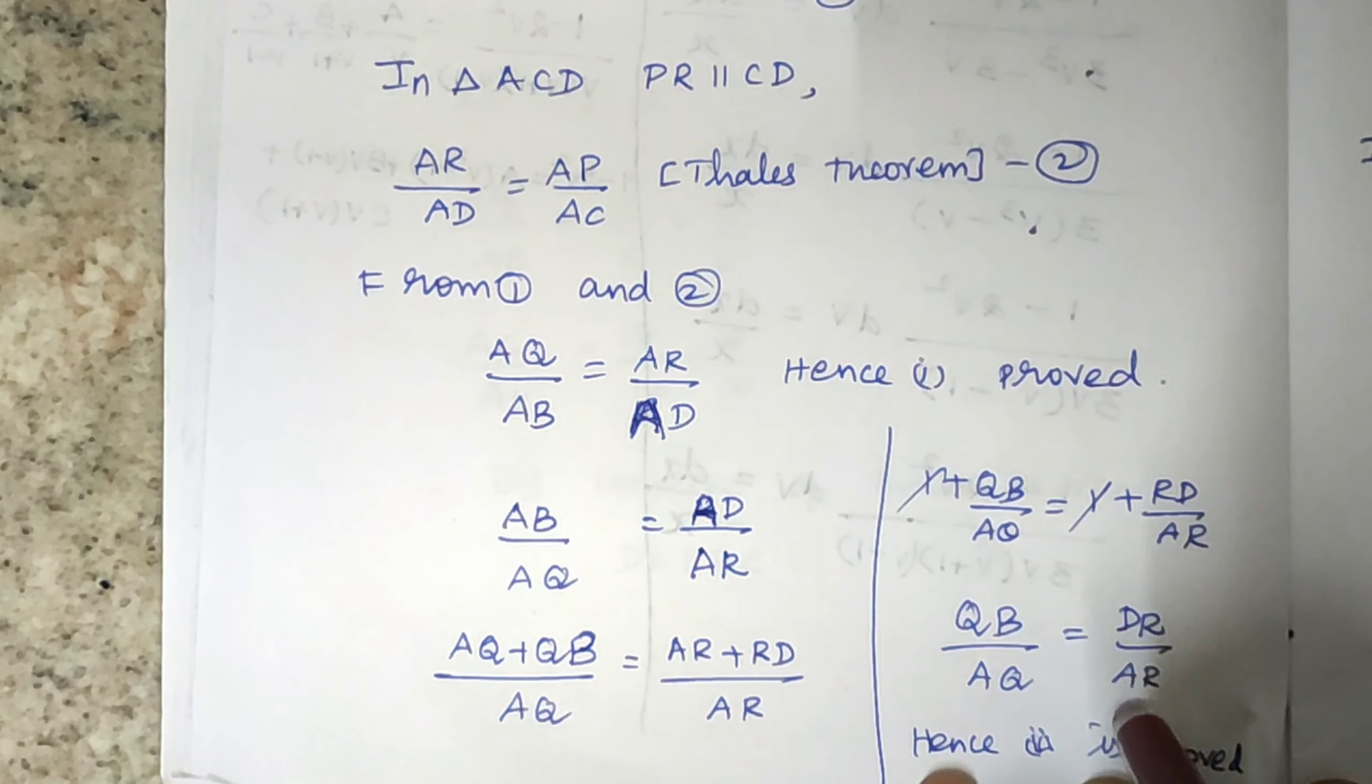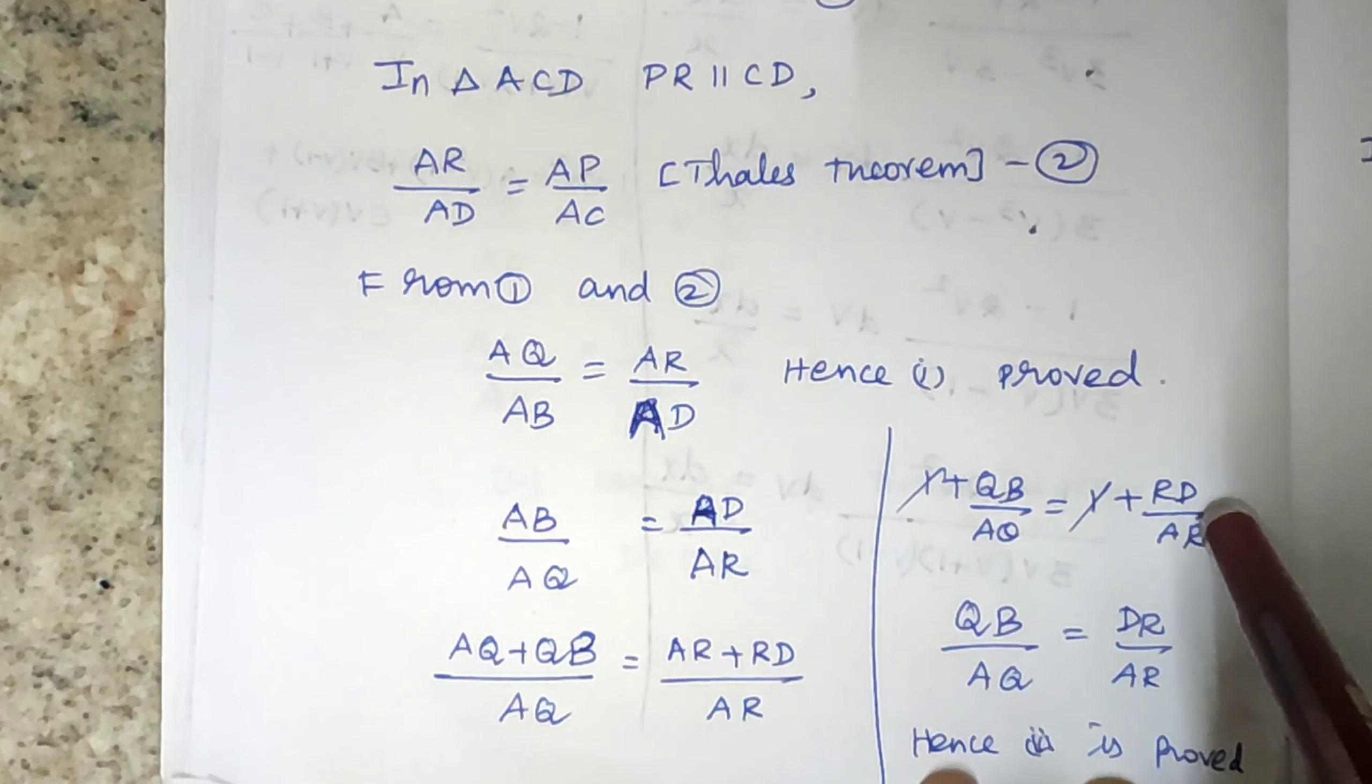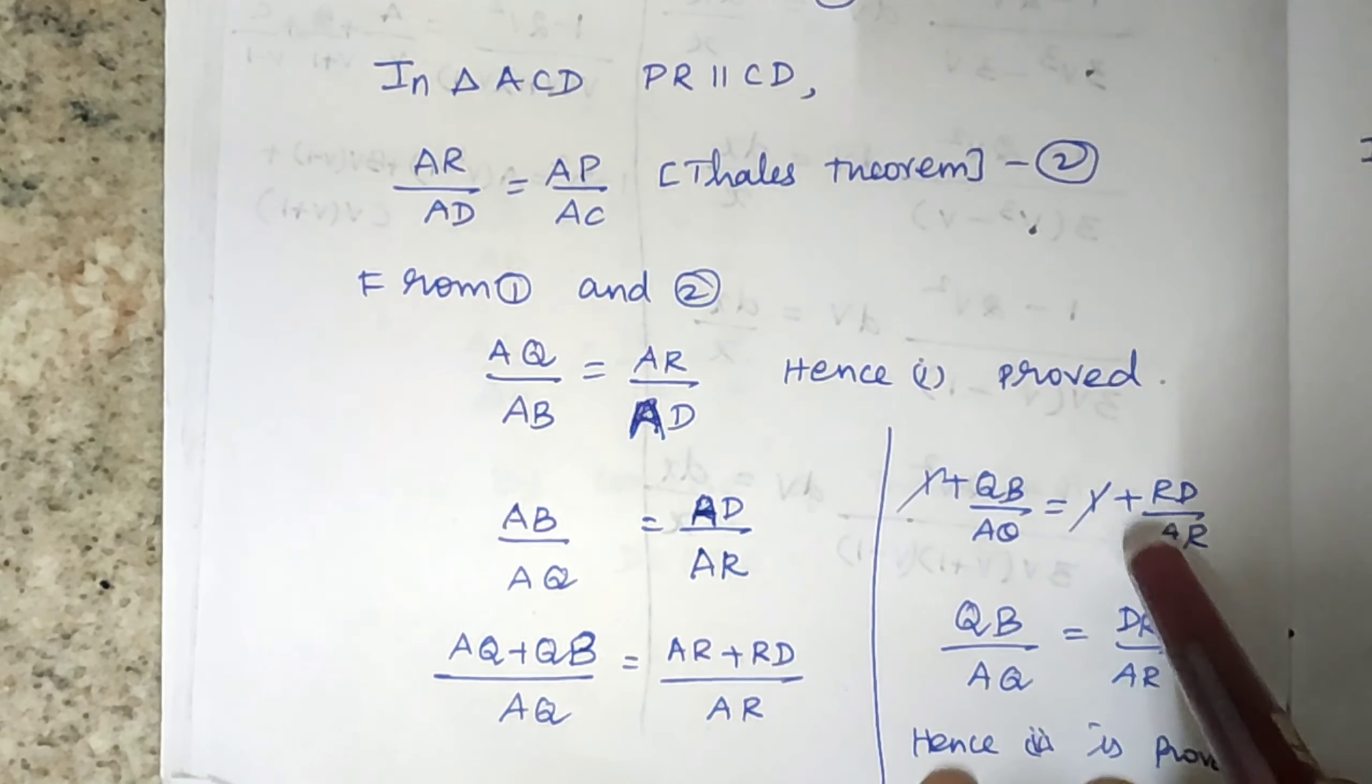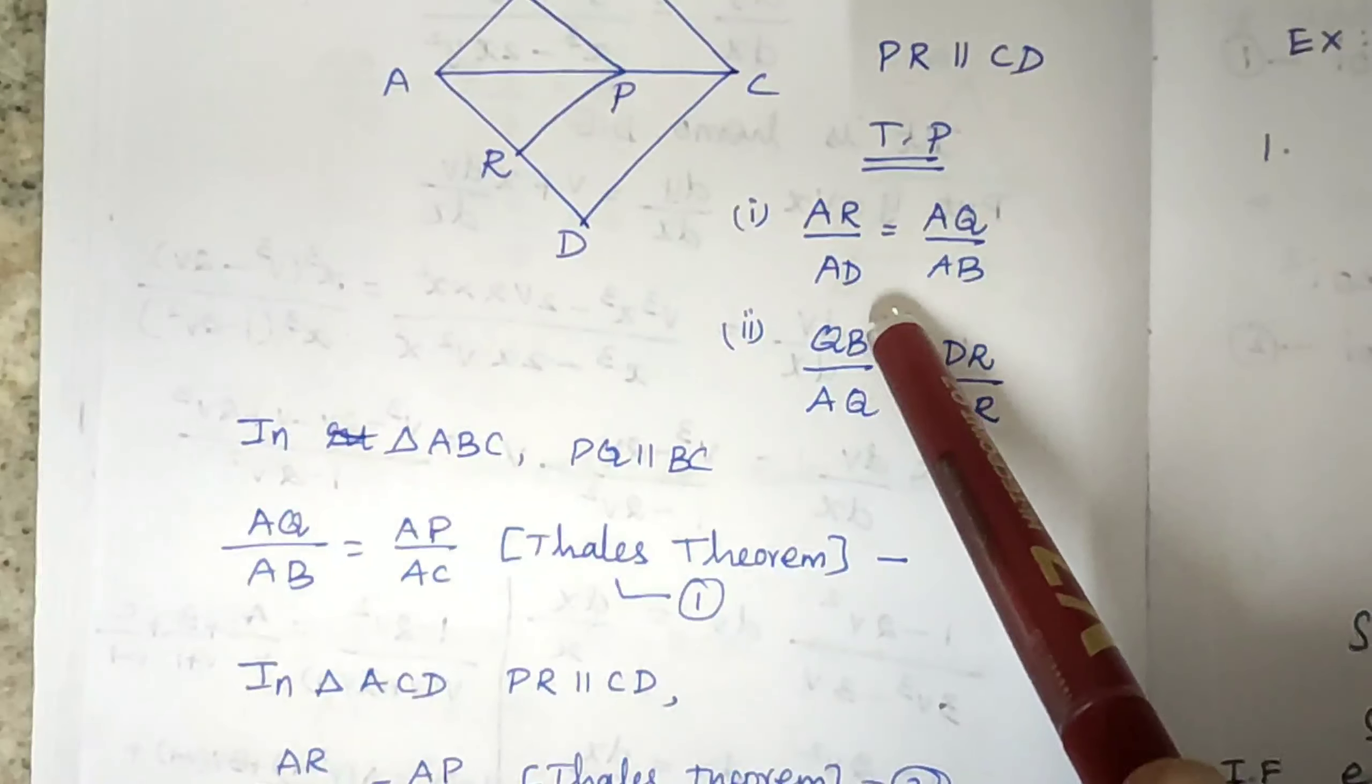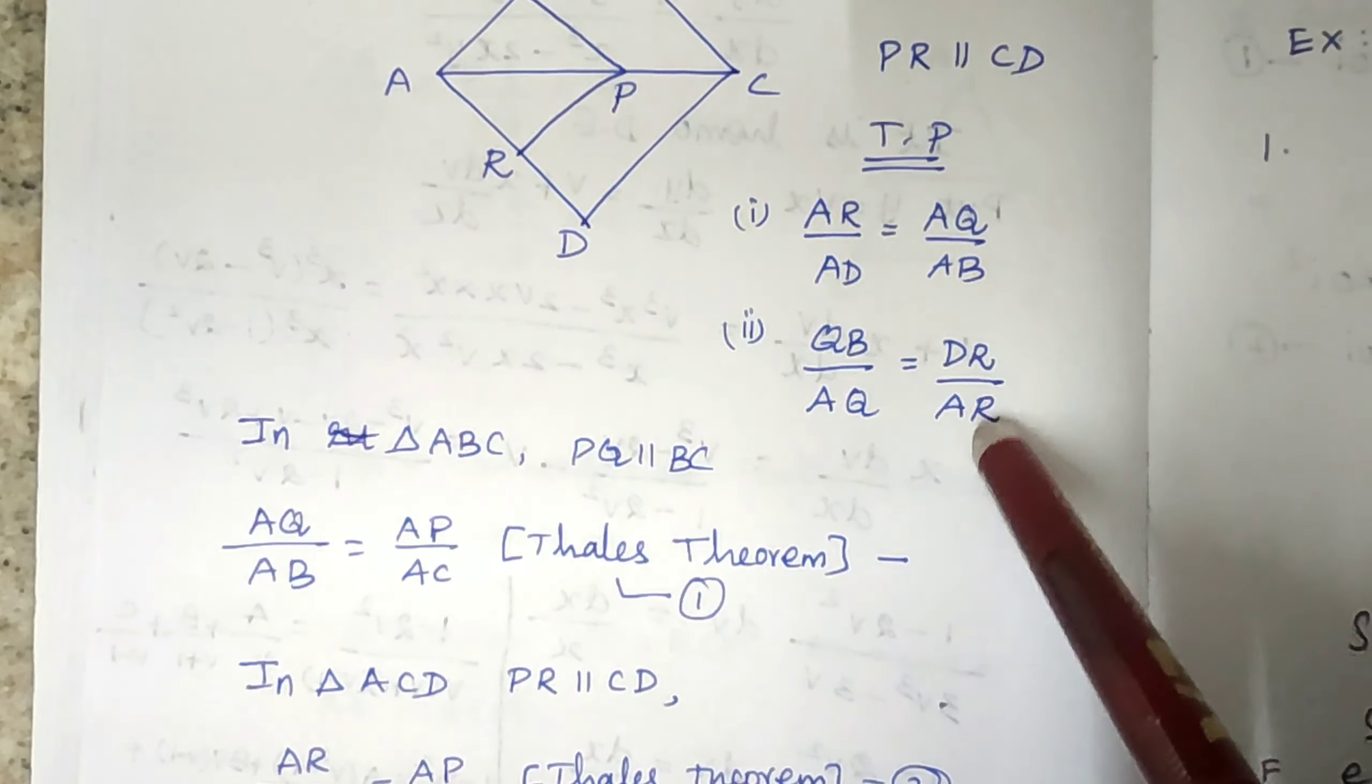So QB by AQ is equal to DR by AR. Hence it is proved. That is our second subdivision. QB by AQ is equal to DR by AR.